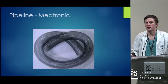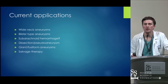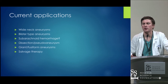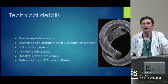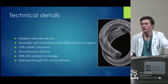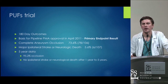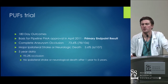The FDA-approved device in the United States is of course the Pipeline and Pipeline Flex. Originally approved for wide-necked aneurysms, off-label use has been widespread for blister-type aneurysms, subarachnoid hemorrhage, dissections, giant aneurysms, and increasingly for salvage of previously coiled or clipped aneurysms. It's a flexible mesh device — 75% cobalt-chromium, 48 strands — providing about 30–35% surface coverage. The PUFS trial was the main trial for FDA approval, with a complete aneurysm occlusion rate of close to 75% and a low stroke rate of 5.6%.